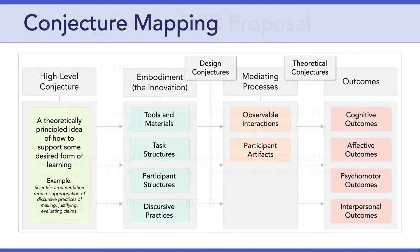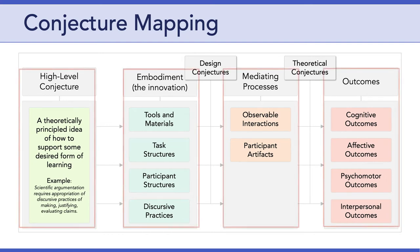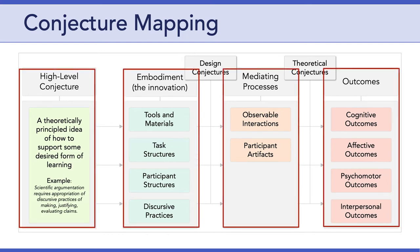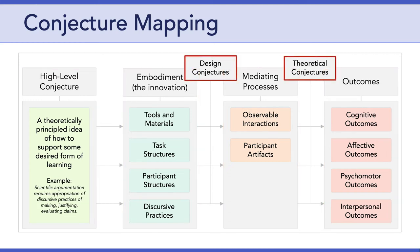This week, we're going to focus on conjecture mapping, which I think is going to help all of you connect a lot of dots. Specifically, we're going to focus on these four columns of the conjecture map, and then specifically, we'll talk about design conjectures and theoretical conjectures.